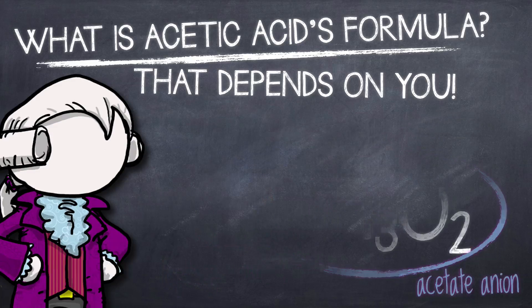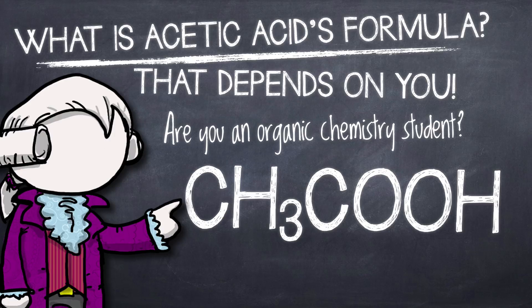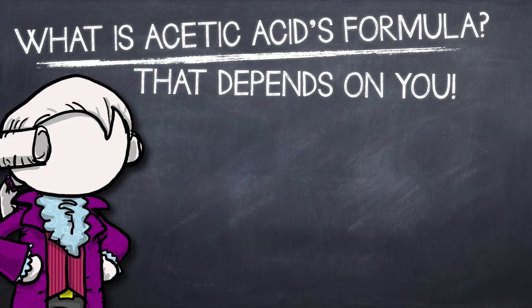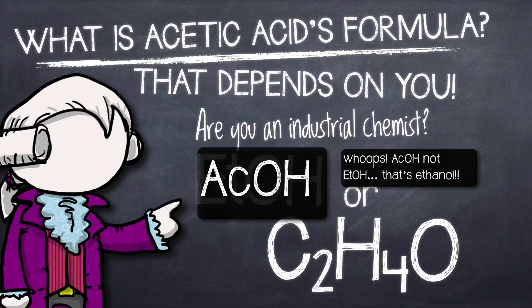An organic chemistry class might refer to it as ethanoic acid, presenting it as CH3COOH to highlight that there is a methyl group attached to a carboxyl group. And an industrial chemist might simply refer to it as C2H4O2.